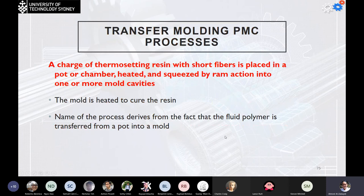In transfer molding PMC processes, a charge of thermosetting resin with short fibers is placed in a pot or chamber, heated, and squeezed by ram action into one or more mold cavities. The material is transferred through channels to fill the cavity — hence the name transfer molding. The mold is heated to cure the resin at a higher rate, and the name derives from the fact that the fluid polymer is transferred from the pot into the mold.